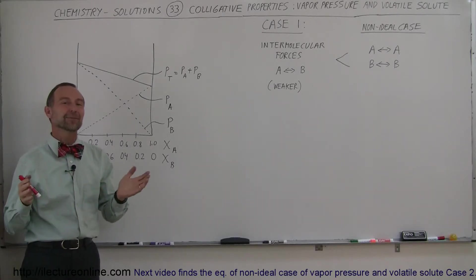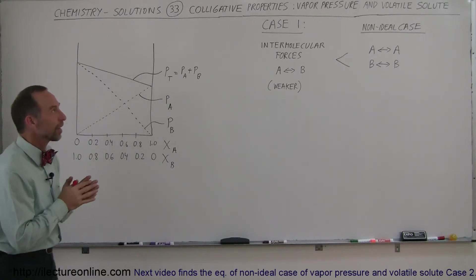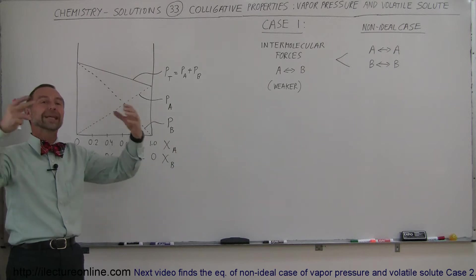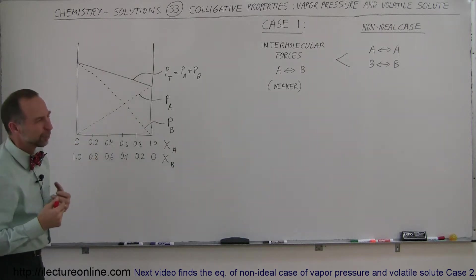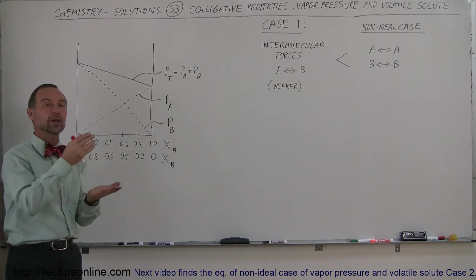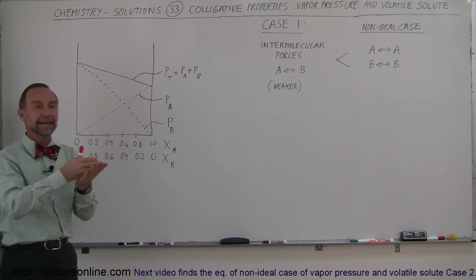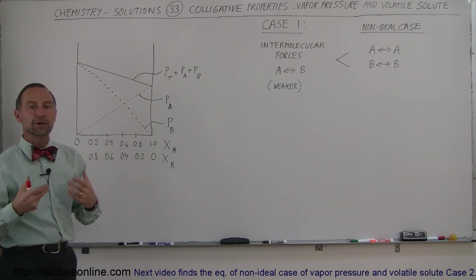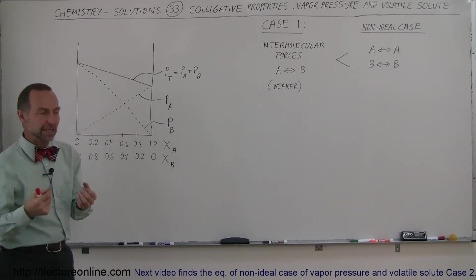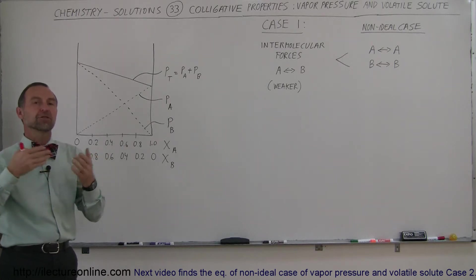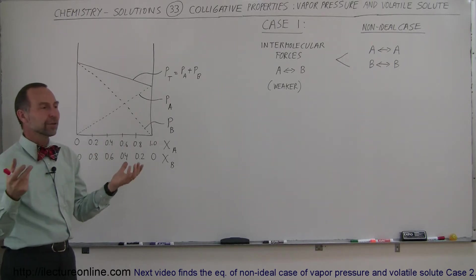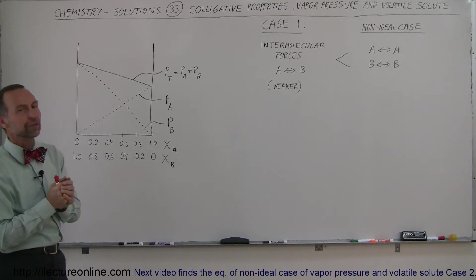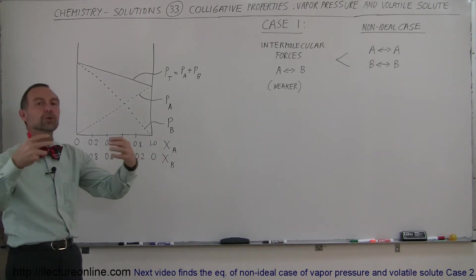Welcome to this lecture. In some previous videos, we talked about the vapor pressure when we put two components together into a solution. The reason why I call them components — usually we call them solvent and solute — but sometimes when both are volatile, meaning they both have vapor pressures of their own, it's hard to identify which is the solute and which is the solvent. So let's just call them two components.